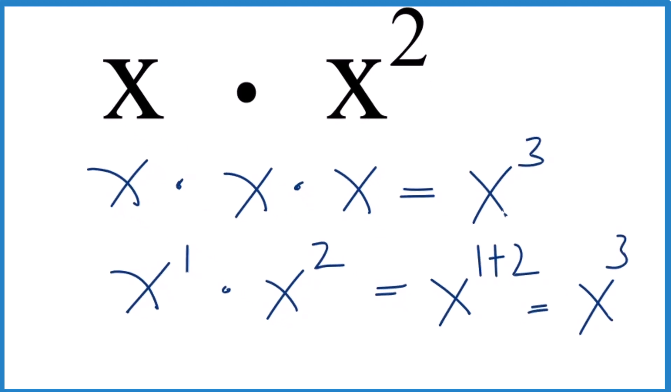And that's what we found up here. So that's really all you need to do. You can think of it as x times x times x, or you can use this general rule: if we have the same base, we just add the exponents.